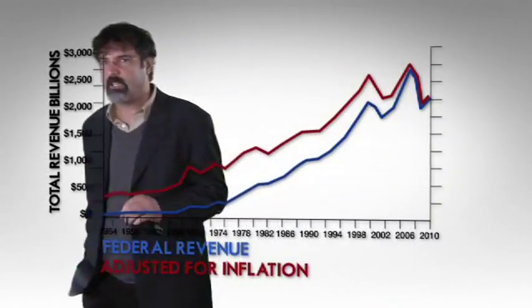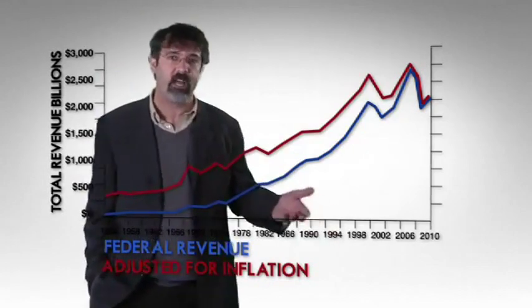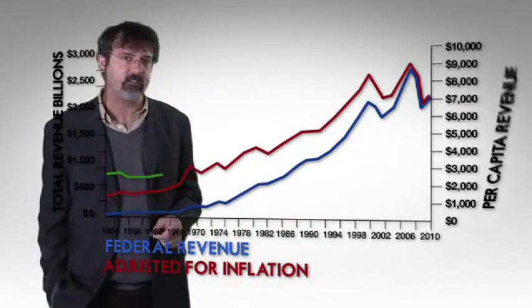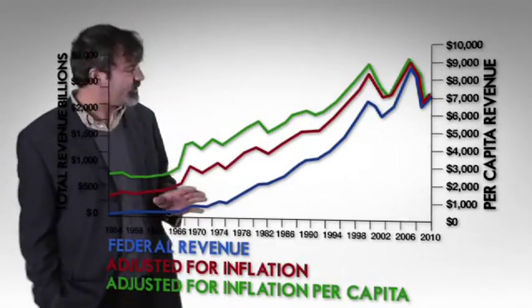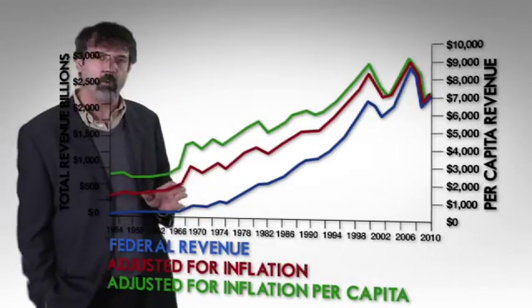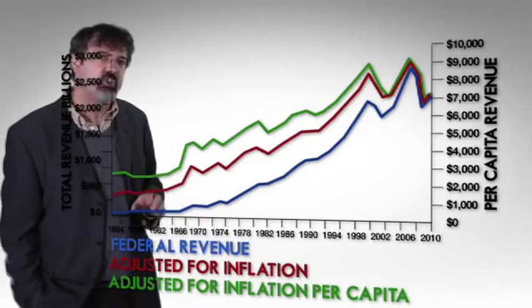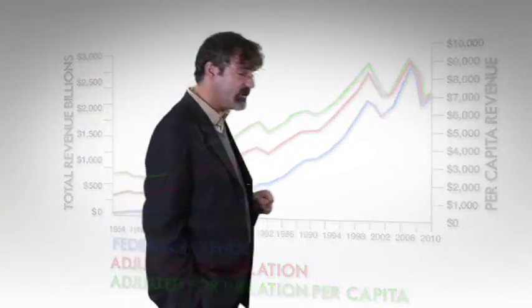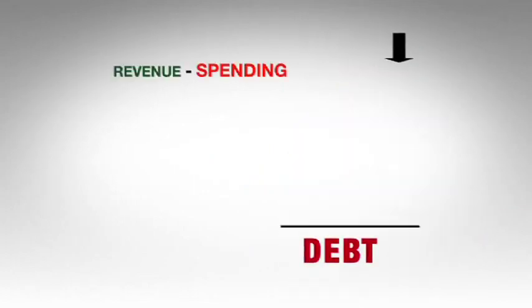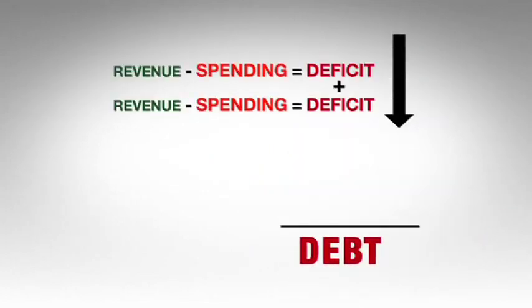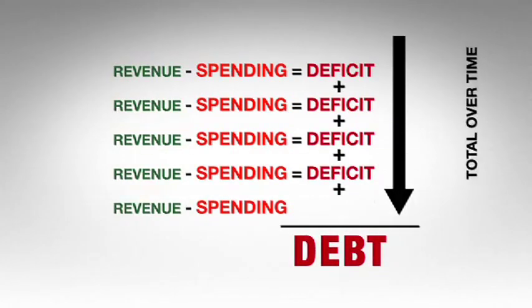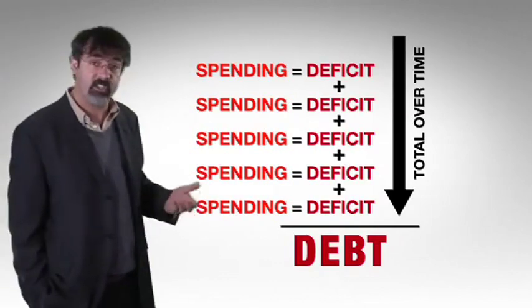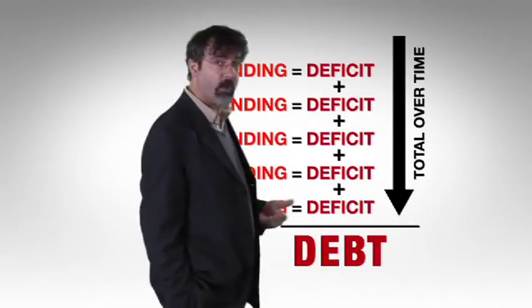But that's not a fair comparison either. There are a lot more people in the United States than there were in the 1950s, so let's adjust tax revenues to account for population growth. Adjusted for inflation and population growth, tax revenue today is three times what it was in the 1950s. This suggests that the government does not have a revenue problem. If debt is caused by deficits, and deficits are caused by revenue and spending, and the government does not have a revenue problem, then the debt problem is really a spending problem.